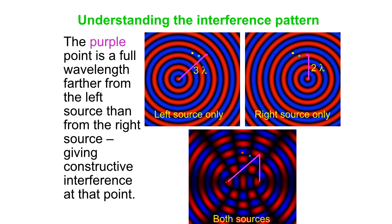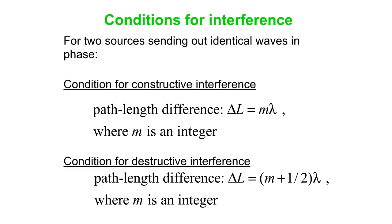To summarize: when two sources send out identical waves and are in phase with each other, the condition for constructive interference is that the path length difference ΔL equals an integer number of wavelengths. We get complete destructive interference when ΔL equals an integer plus a half number of wavelengths. Here M is just 0, 1, 2, 3, 4, etc.